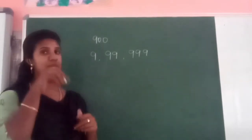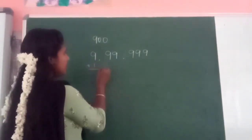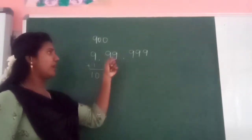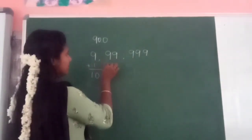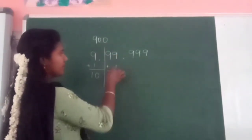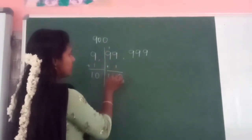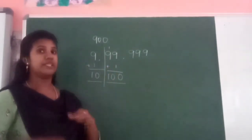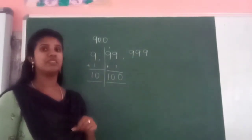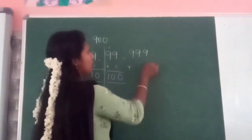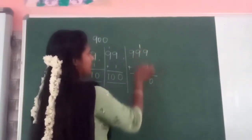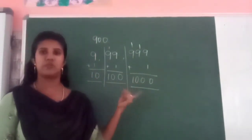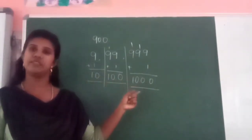So 9 plus 1 is 10. When we add 1 to a two-digit number, we get a three-digit number. The same way, when we add 1 to a three-digit number, we get a four-digit number. And we got a four-digit number — that is 1000. So this is the pattern: 10, 100, 1000.